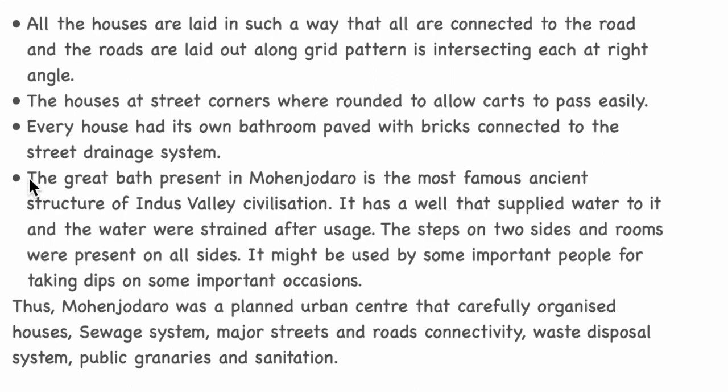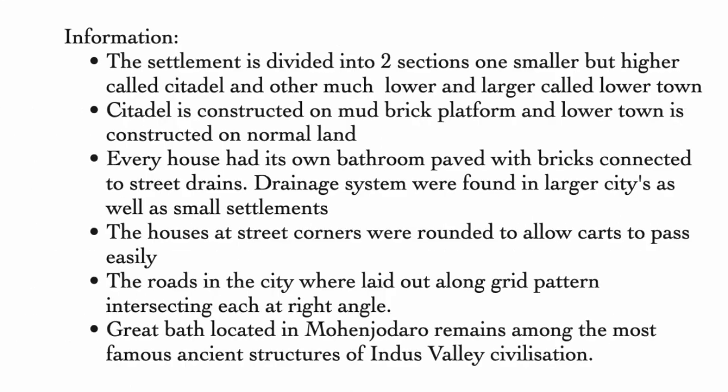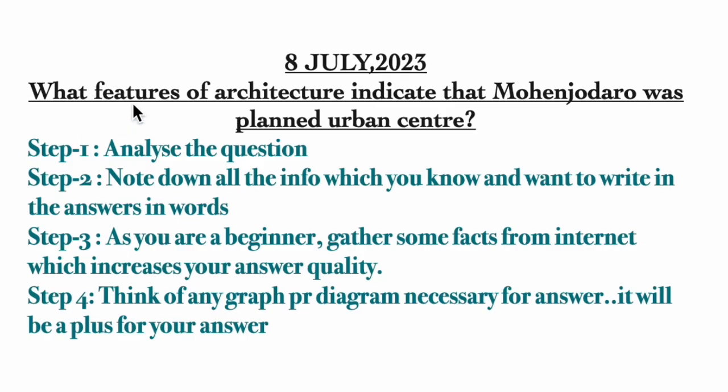Thus, Mohenjo-daro was a planned urban center that carefully organized houses, sewage systems, major streets, road connectivity, waste disposal, public greenery, and sanitation. As this is a direct question, no elaborate conclusion was written.